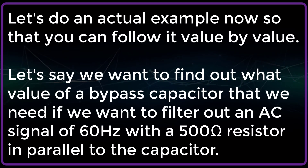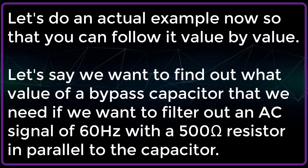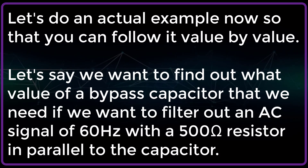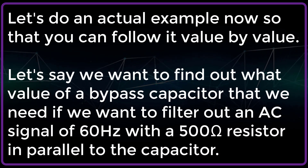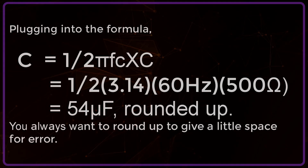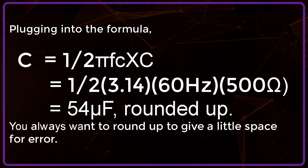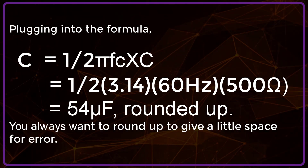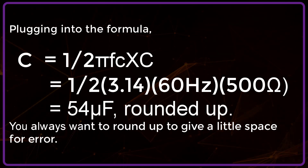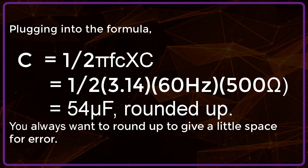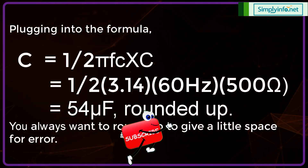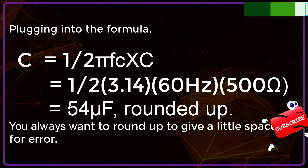Let's do an actual example so you can follow it value by value. Let's say we want to find the value of a bypass capacitor needed to filter out an AC signal of 60 hertz with a 500 ohm resistor in parallel to the capacitor. Plugging into the formula: C = 1 / (2 × 3.14 × 60 Hz × 500 Ω) = 54 μF rounded up. You always want to round up to give a little space for error.